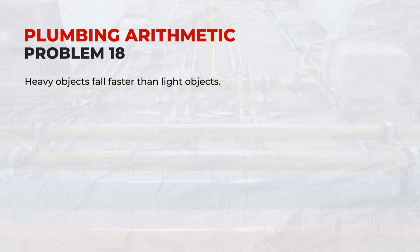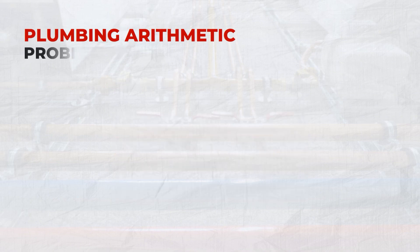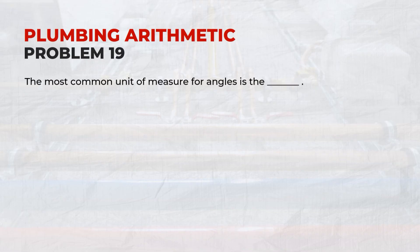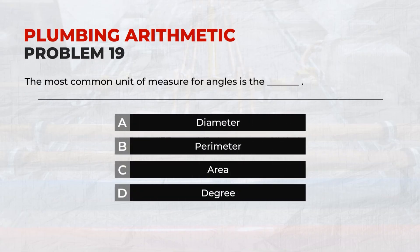Problem 18: Heavy objects fall faster than light objects. Answer: B, Aristotle's theory. Problem 19: The most common unit of measure for angles is the? Answer: D, Degree.